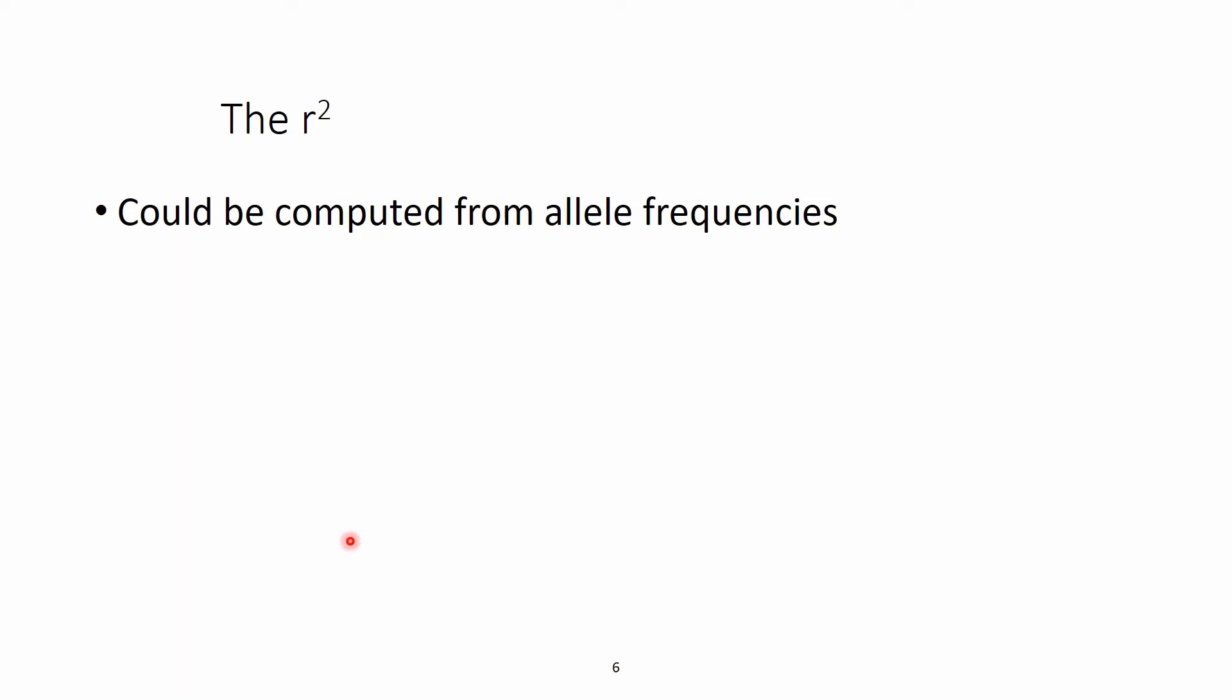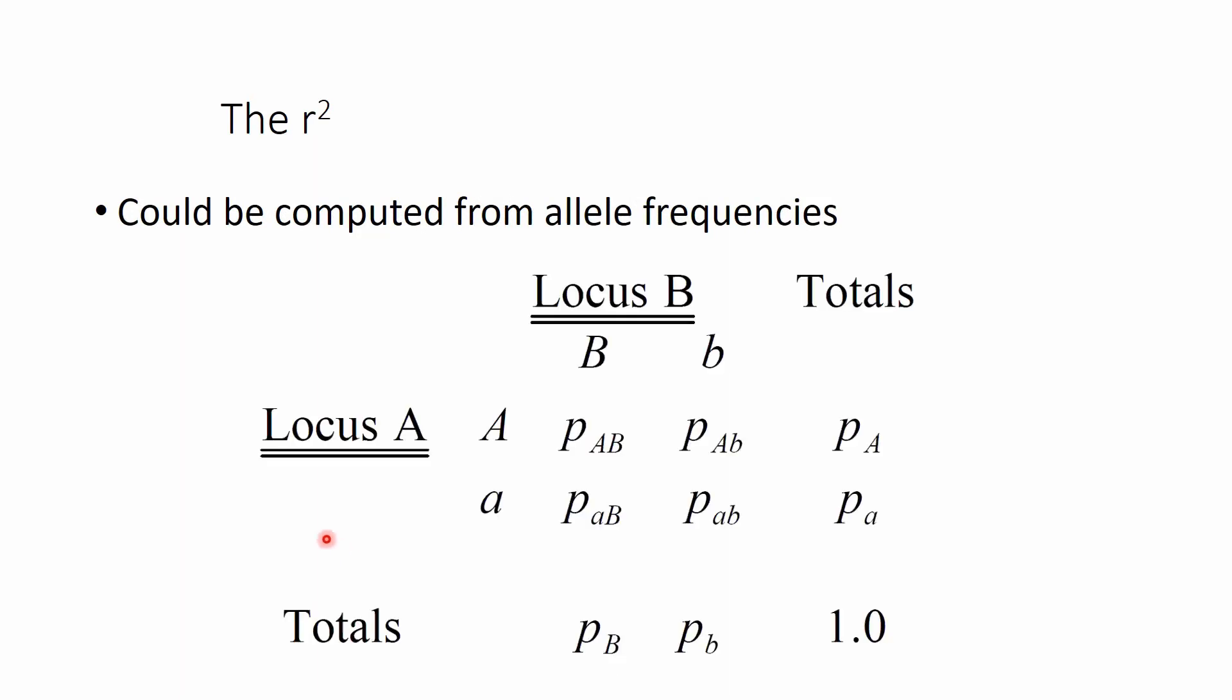The R-square itself could be computed based on the allele frequencies from this 2x2 table. So we have a locus A and a locus B, and each of them has two alleles, capital B and a small b, and a capital A and a small a. These values are valid for a bi-allelic system. But because the SNPs on the SNP chips are bi-allelic by design, then we are good to go.